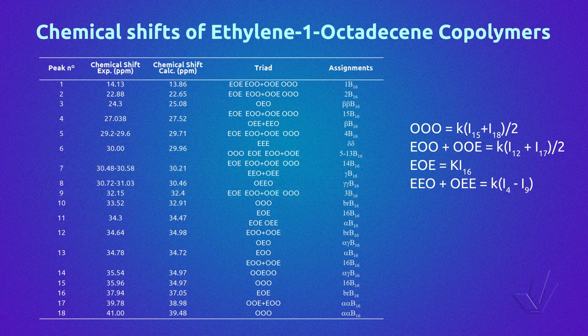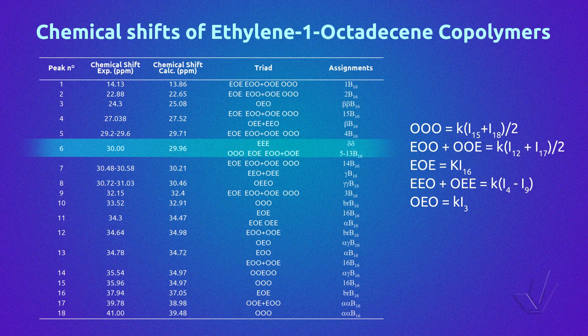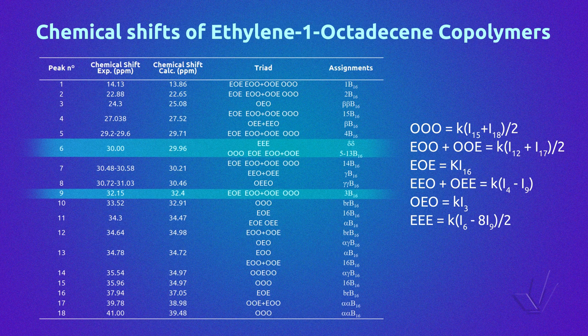For triad O-E-O, we can use the integral of peak 3. And finally, for triad E-E-E, we use peak 6, but in this peak there are 5 carbons of the branch, from carbon 5 to 13 of the branch. So we can use the integral of peak 9 multiplied by 8 to subtract from the integral of peak 6. Remember that in this case we have to divide by 2 because there are 2 delta-delta carbons of triad E-E-E.